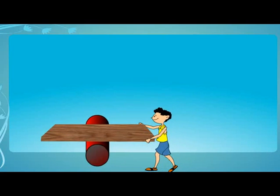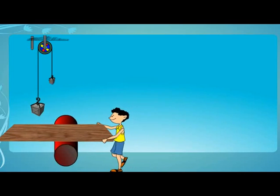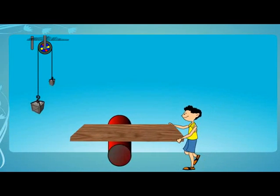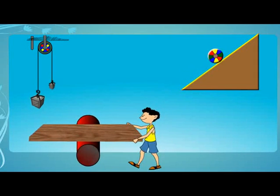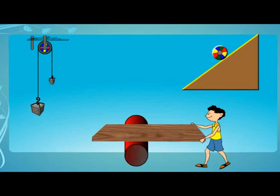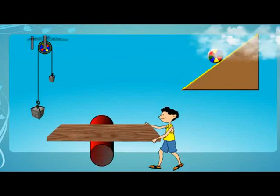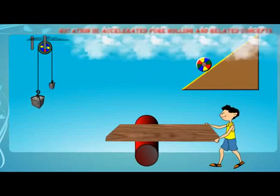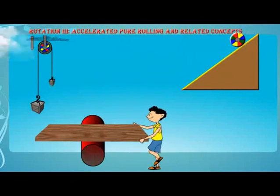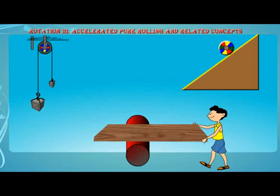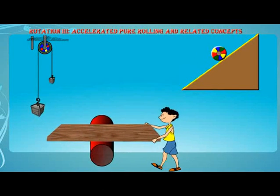In the last chapter, we learnt about rotation combined with translation. However, we didn't learn about what happens to a rotating body when different forces act on it. In this chapter, we are going to learn about what happens when different forces act on a body that is purely rolling or what makes a body roll purely. We will learn about accelerated pure rolling and related concepts in this chapter.